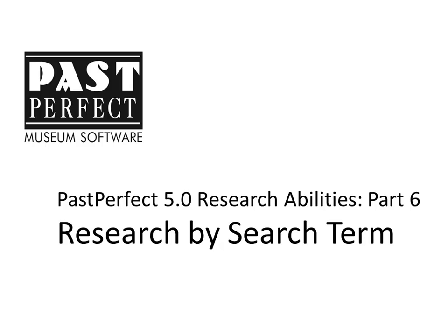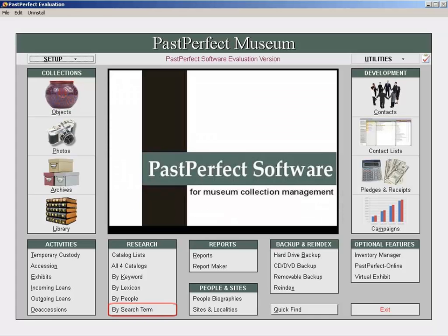To access the Research by Search Term function, click on By Search Term under the Research heading on the main menu.